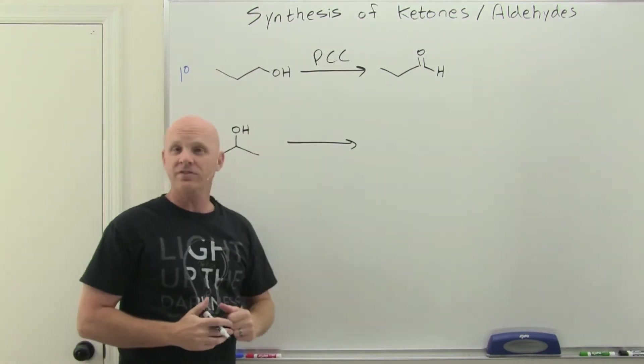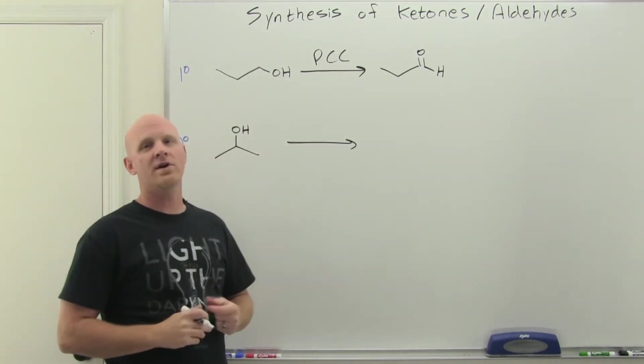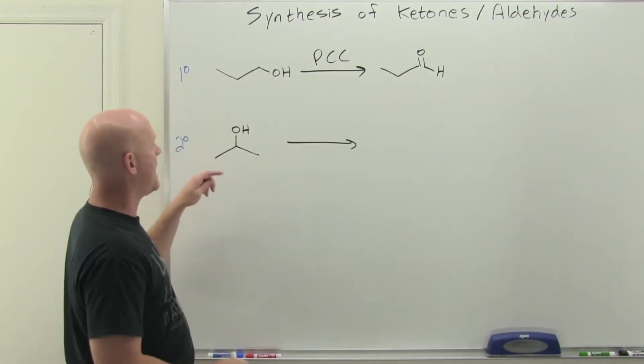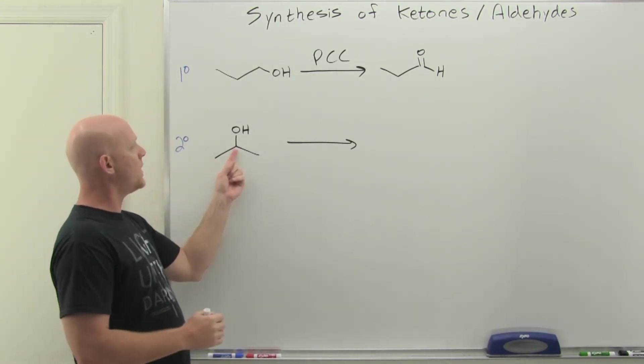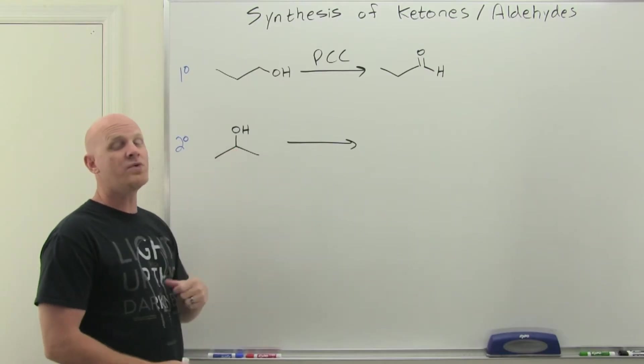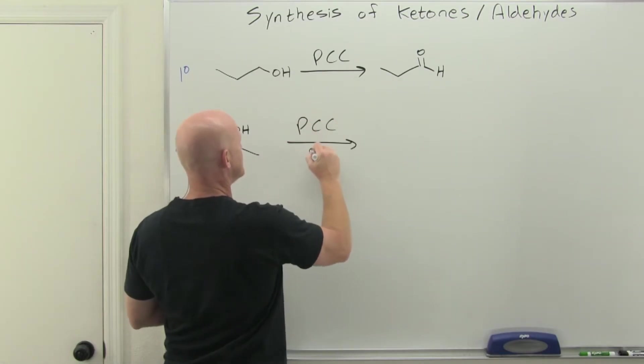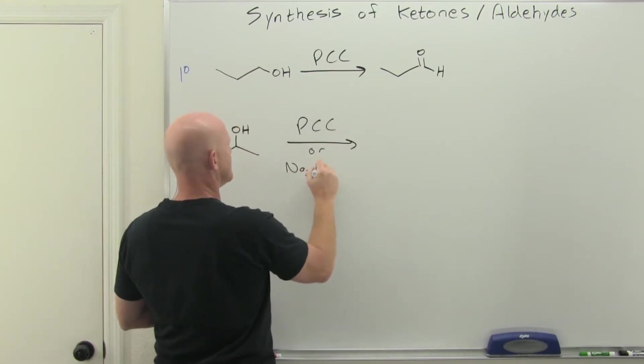Had we used chromic acid, we would oxidize it two steps all the way to a carboxylic acid, which obviously is not the relevant functional group for this chapter. But for secondary alcohols, there's only one hydrogen on the carbon with the hydroxyl group, so it's only capable of one step of oxidation.